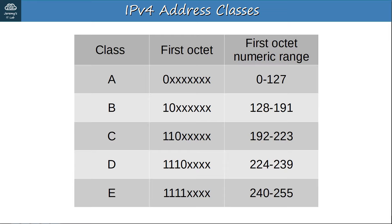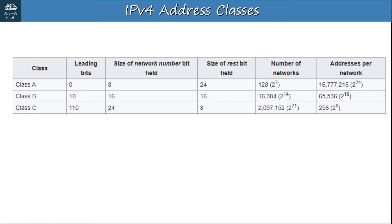This is the chart of the IPv4 address classes from the last video. The 127 range is reserved for loopback addresses, so it's generally not considered part of the class A range. The 0 range is also reserved in class A, so some might say class A really begins at 1, making the range 1 through 126. Different sources say different things, so I recommend remembering class A is 0 through 127, but also keep in mind that 0 and 127 are reserved, so the usable range is really 1 through 126.